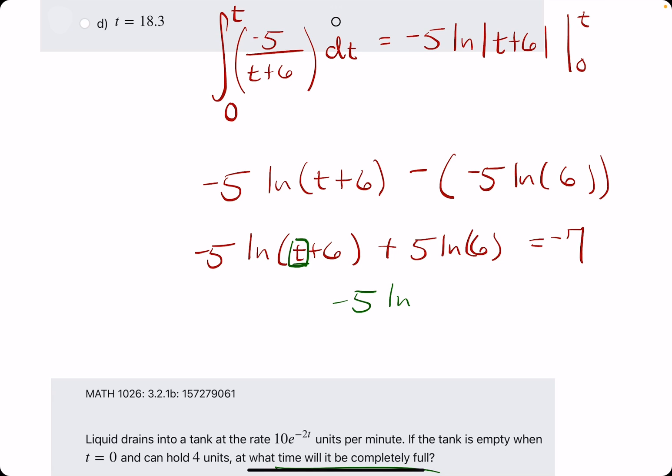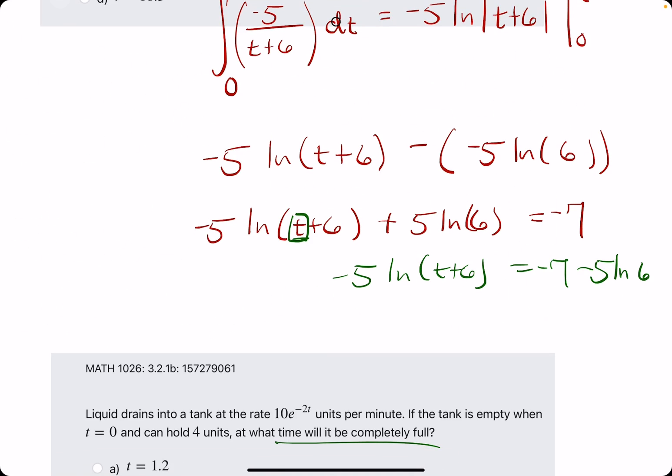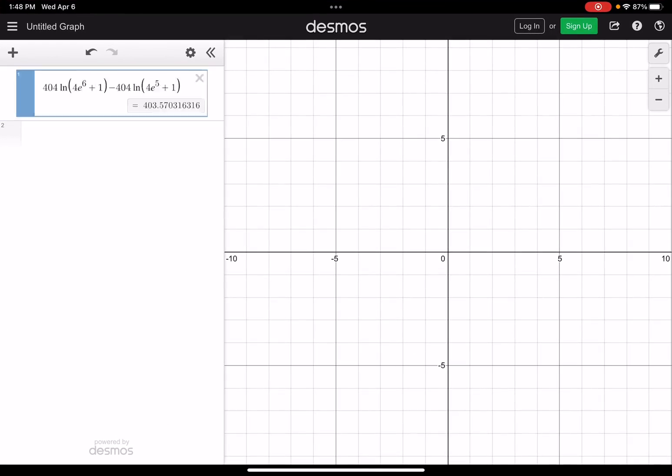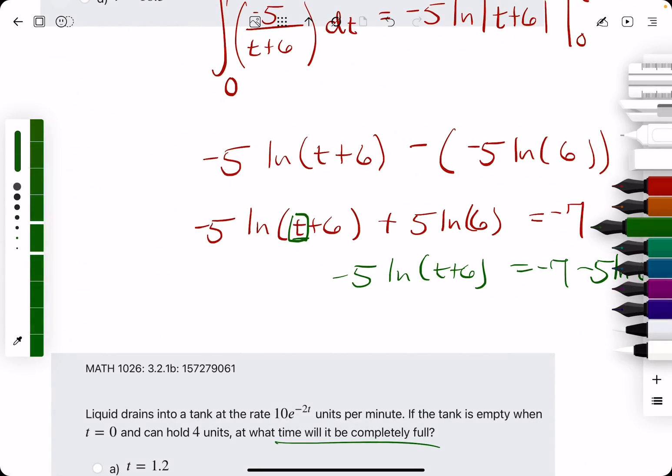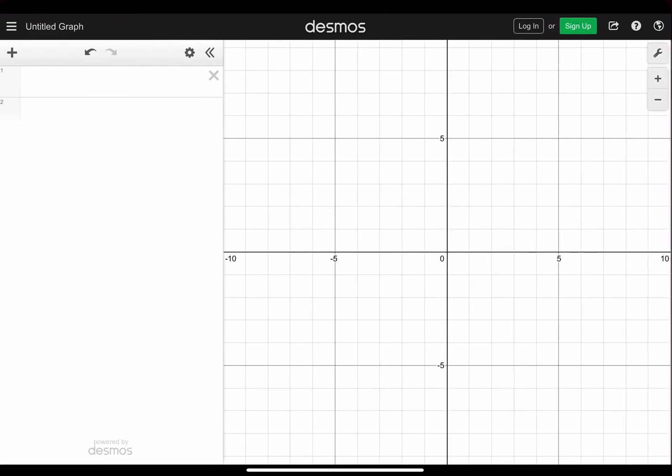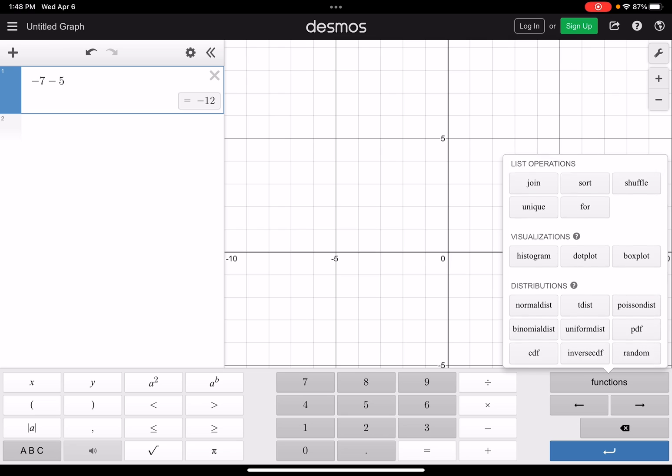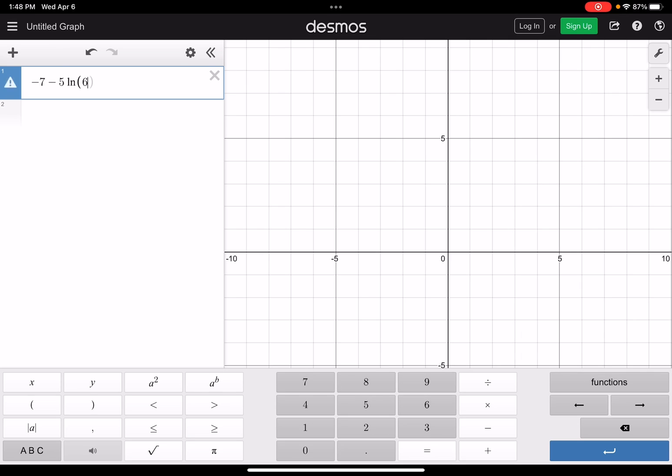The first thing we will do is subtract five ln of six to the right side. Let's go ahead and get a decimal for that. We'll do negative seven minus five ln of six, and that gives us negative 15.96.